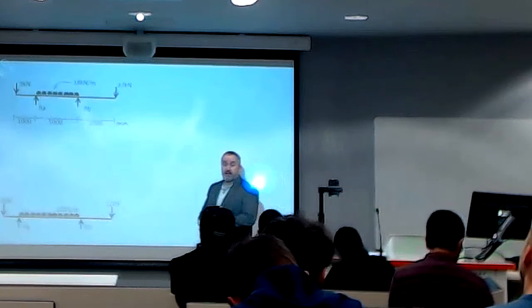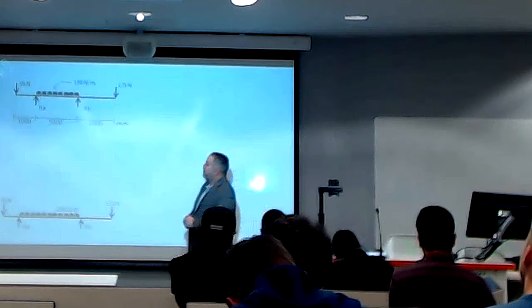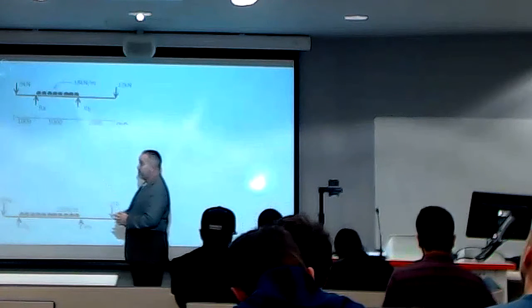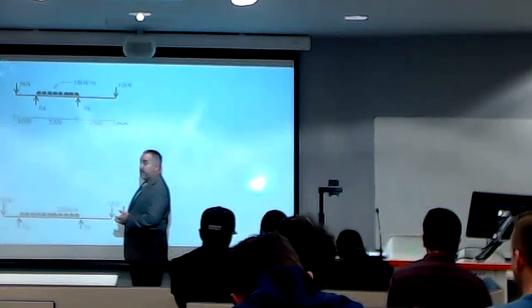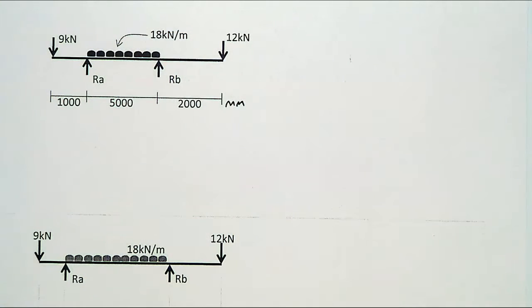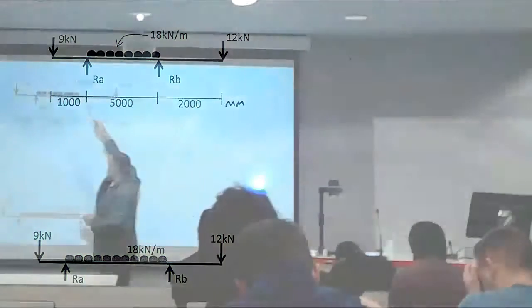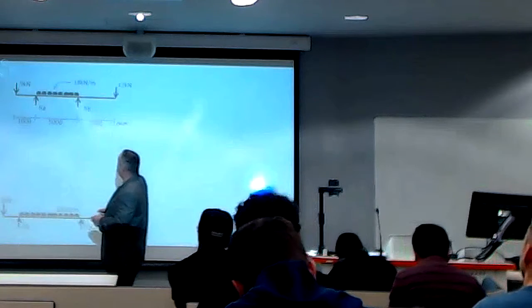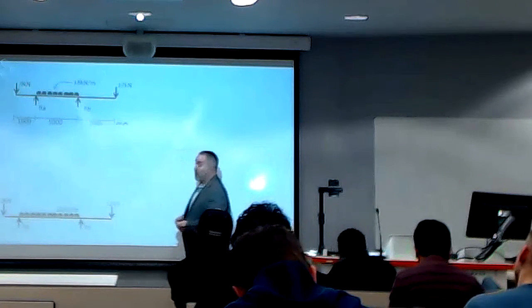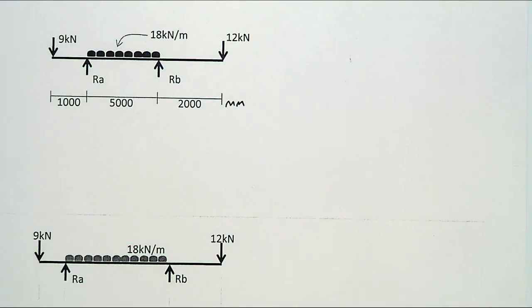For a typical test, you will be asked to work out the reactions, the shear force, the bending moment, and possibly predict the curvature — like which way the beam will actually deform. We'll go through this example. We have two point loads, a 9 and a 12 kilonewtons, then a UDL — uniformly distributed load — of 18 kilonewtons per metre, and our two reactions A and B.